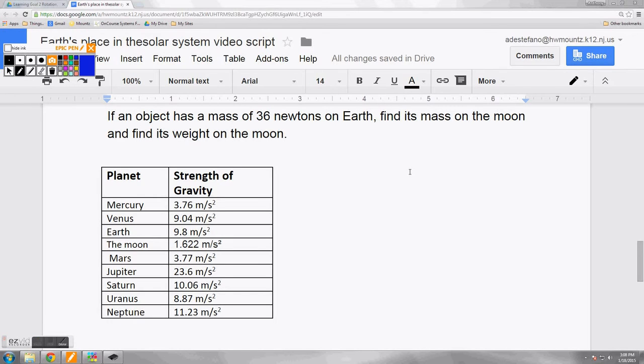In our last and most complicated problem, we have an object with a mass of 36 newtons on Earth, and we're looking to find its mass on the moon and its weight on the moon. In this problem, we'll need to use our chart of strengths of gravity on different planets in our system.